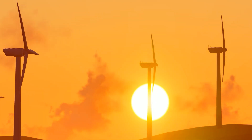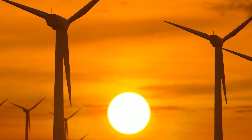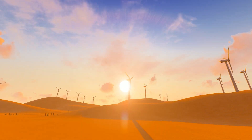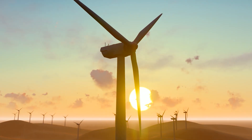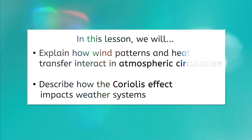Let's use what we already know. We've talked about wind and heat transfer in the atmosphere. How do these work together to impact global weather and climate phenomena? In this lesson, we will learn how different factors like wind and heat interact in a process called atmospheric circulation. We'll also learn about a pattern called the Coriolis effect and how it impacts weather systems, including hurricanes.